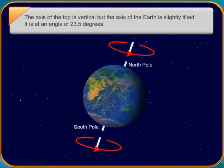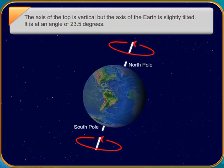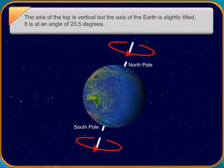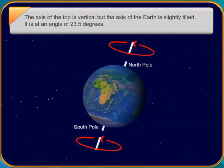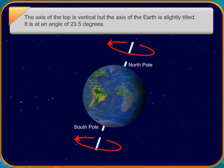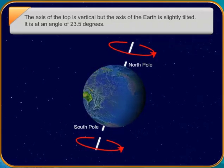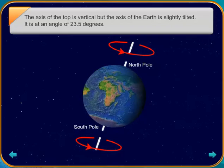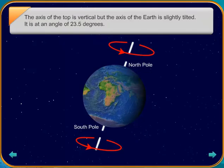The spinning of the Earth around its axis is called rotation. The rotation of the Earth always takes place in the same direction, from west to east. Do you know how much time the Earth takes to rotate on its axis once? The Earth takes 24 hours to spin around its axis once.